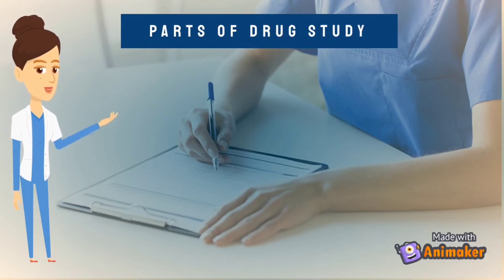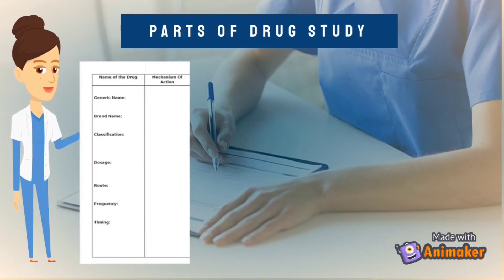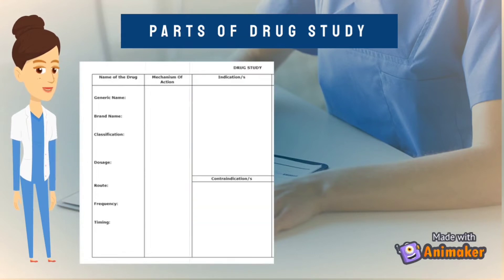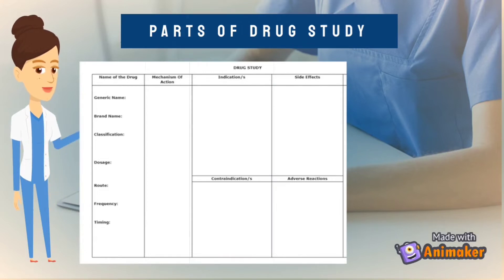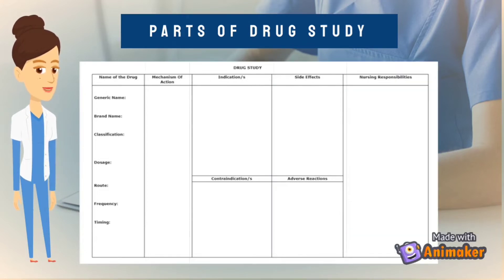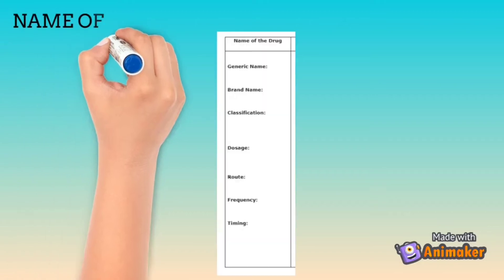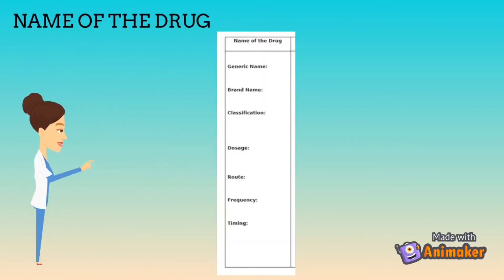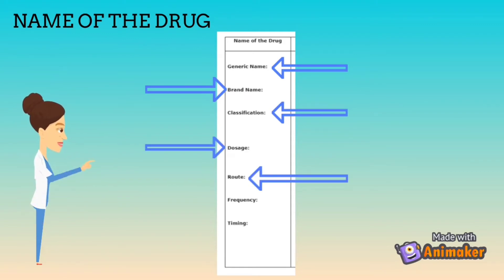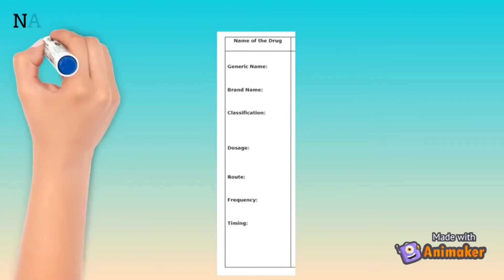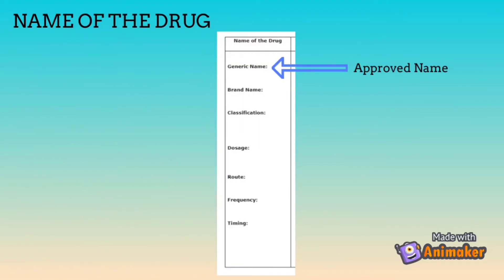The name of the drug includes the generic name, brand name, classification, dosage, route, frequency, and timing. Each medicine has an approved name called the generic name. The brand name refers to the name given by the producing company. Drug classifications are a way to organize drugs into categories. Dosage refers to a specified amount of medication taken at one time. Taking medicine at the time prescribed is essential to ensuring the body has an effective amount of the drug at all times.